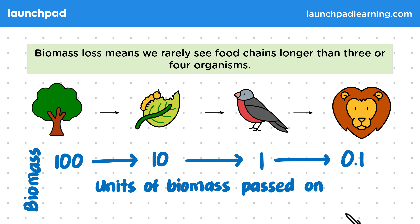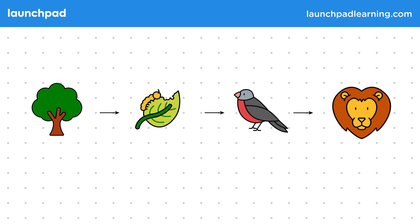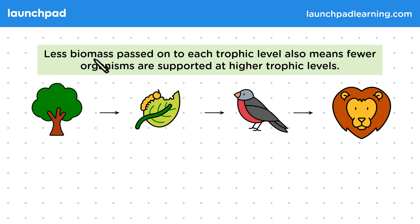What are the implications of this on the number of organisms? Less biomass passed on to each trophic level also means fewer organisms are supported at higher trophic levels.